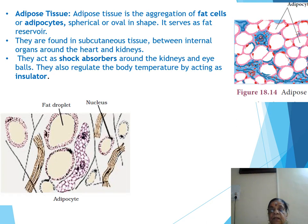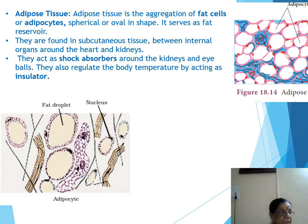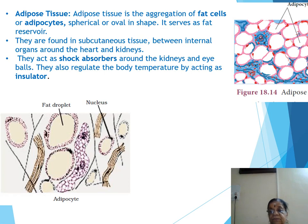The conversion of glucose into glycogen mainly takes place in the liver through the secretion of the hormone insulin. If insulin is not secreted properly, the conversion of glucose does not take place, leading to an increase in sugar level — a condition called diabetes.